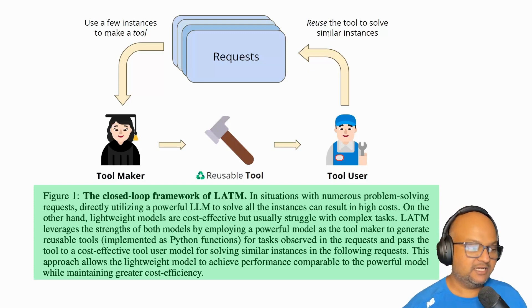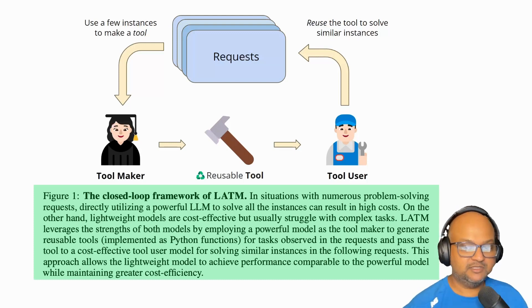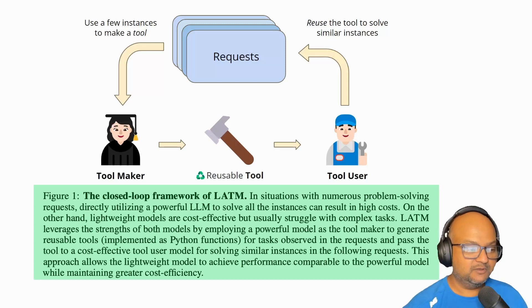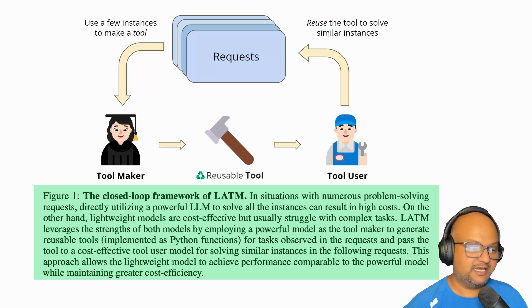This framework uses two different LLMs: the tool making LLM and the tool using LLM — the tool maker and the tool user. The tool making LLM needs to be the more capable or more expensive one, whereas the tool using LLM can be the lighter weight or cheaper LLM.